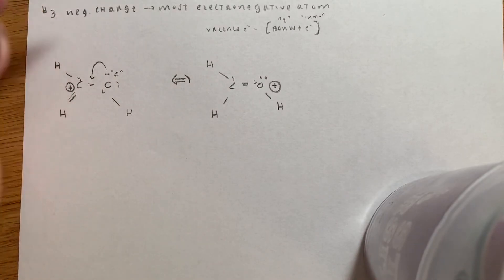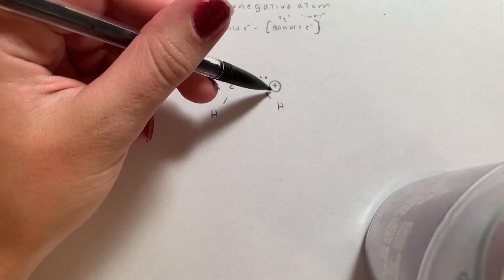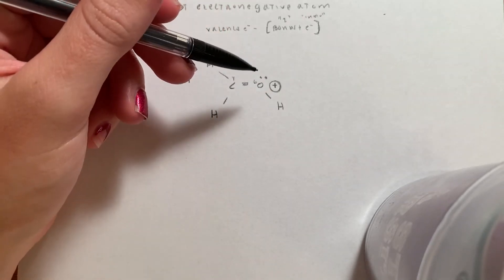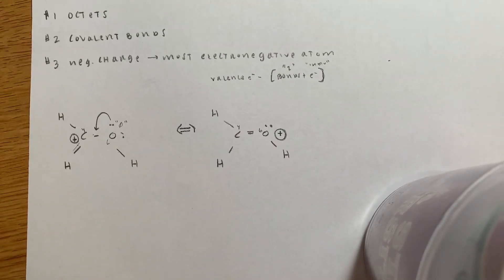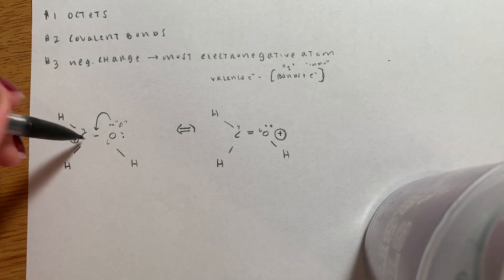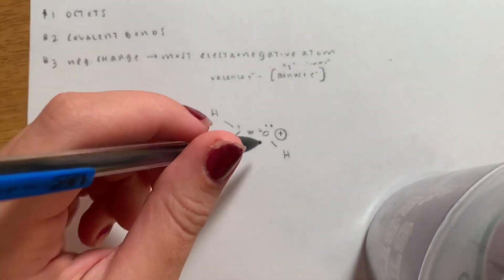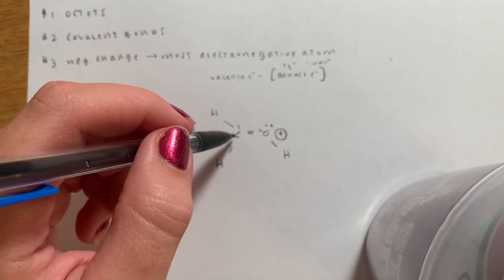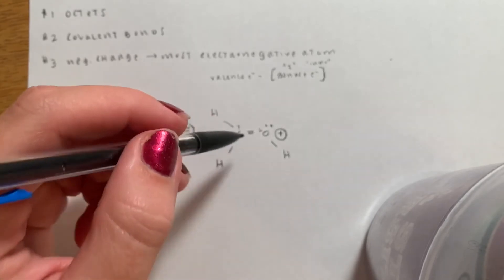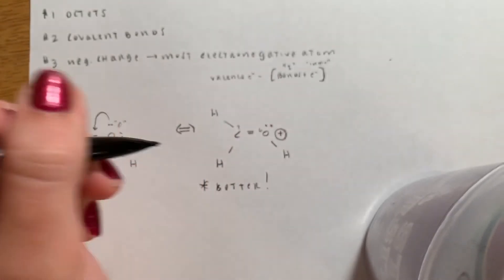But you're like, wait, our number three says that we want a negative charge on the most electronegative atom, but we have a positive charge on the most electronegative atom. So what does that mean? But wait, our number one rule is octets. This molecule, the carbon doesn't have a full octet, but in this molecule, all of the atoms inside, mostly the carbon and the oxygen, have a full octet. So that means that this resonance structure is better, which is good.